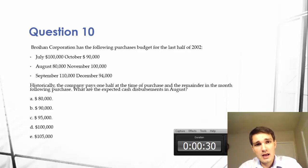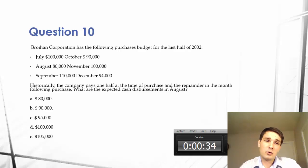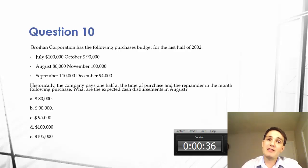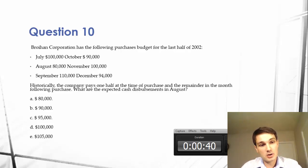The corporation has the following purchasing budget — and then it gives us the budget. But historically, the company pays one half at the time of purchase and the remainder in the month following. What are the expected cash disbursements in August?